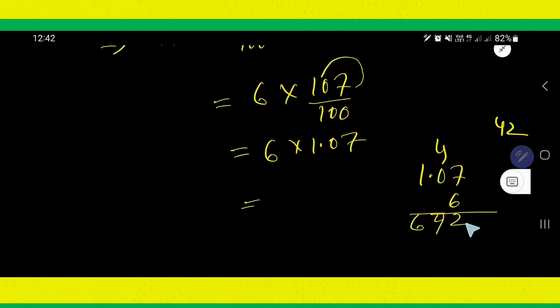After the decimal, we have 2 digits. So, 1, 2. 6.42 is the answer. This is the answer.